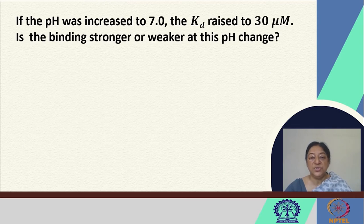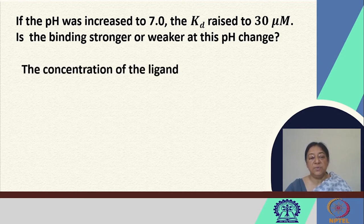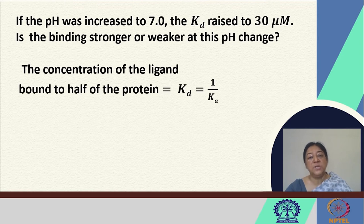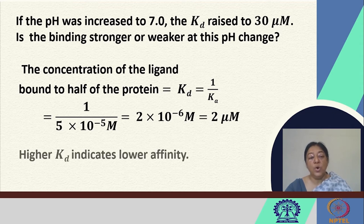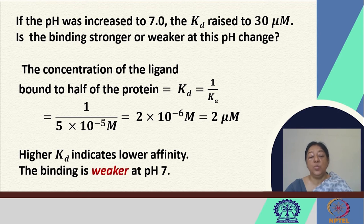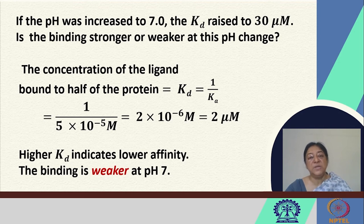If the pH is increased to 7 and Kd raises to 30 micromolar, we ask whether the protein binds stronger or weaker. Previously at pH 5 the Kd was 2 micromolar; at pH 7 it is 30 micromolar. A higher Kd indicates lower affinity, so the binding is weaker at pH 7. This allows us to understand binding capabilities at different pH values and assess how to design ligands that bind proteins effectively.